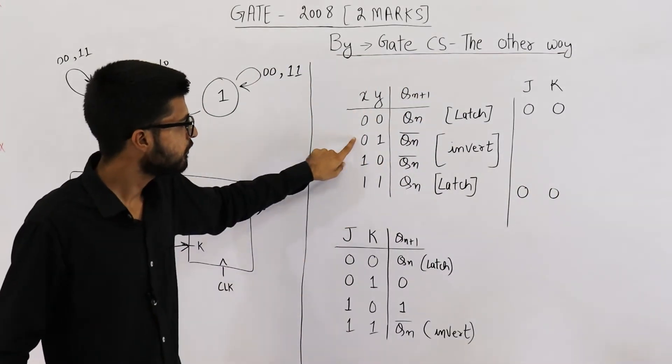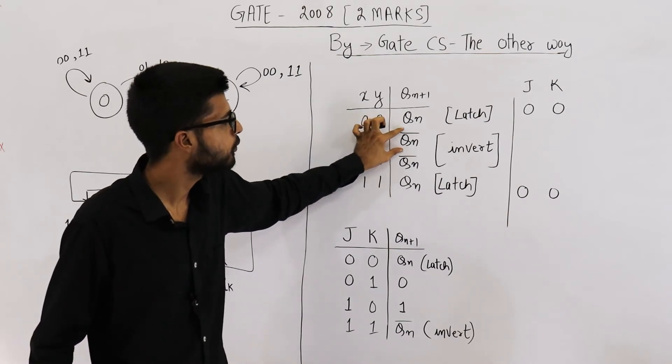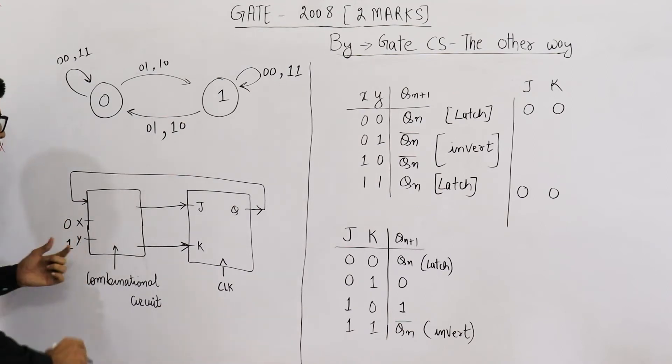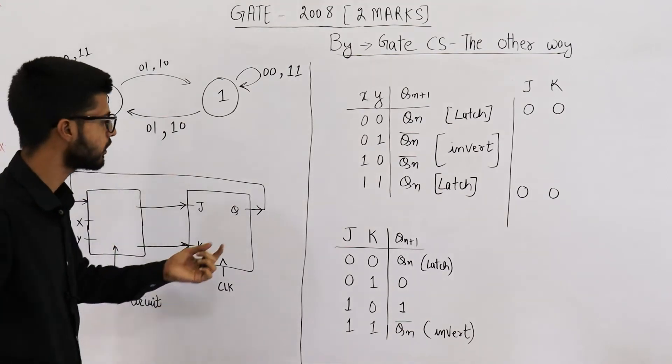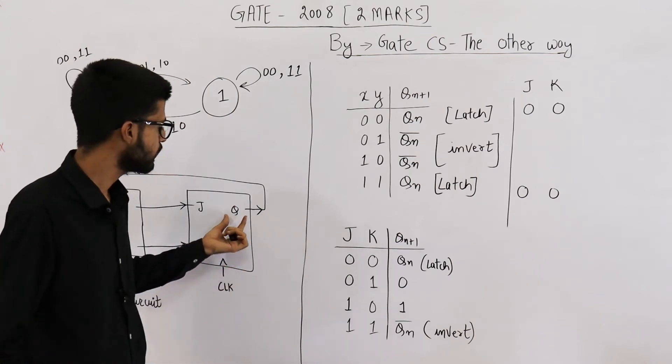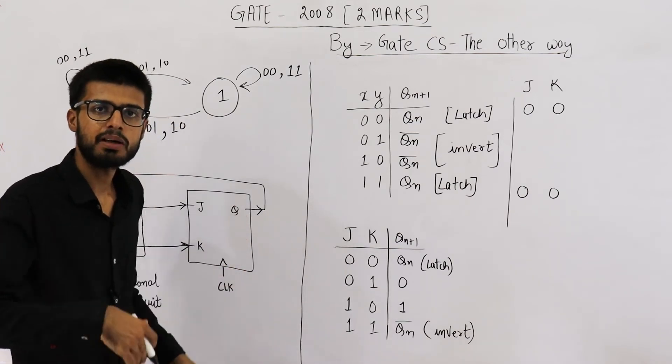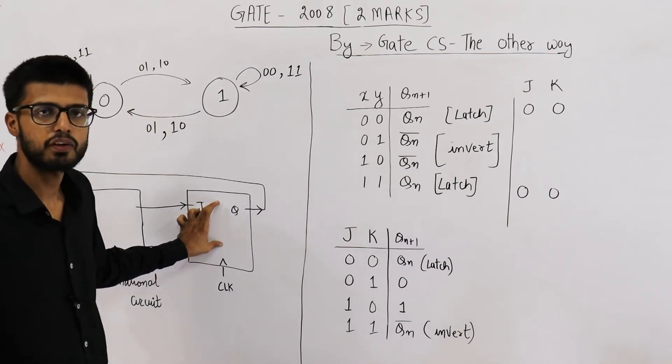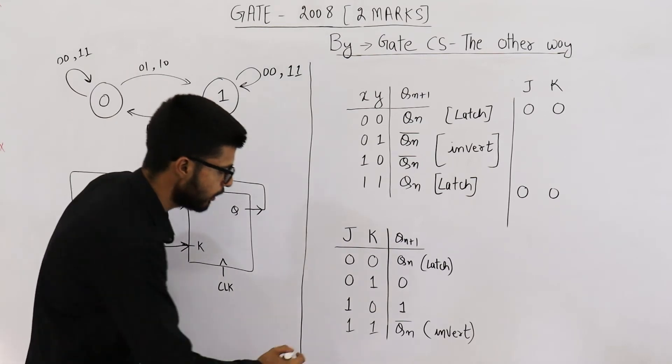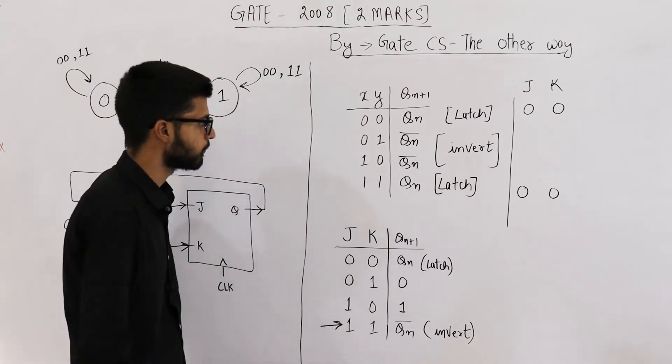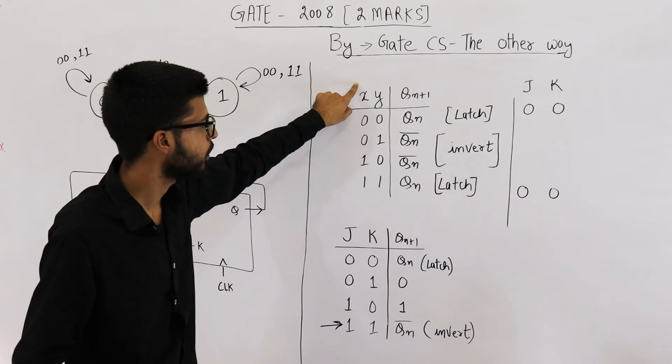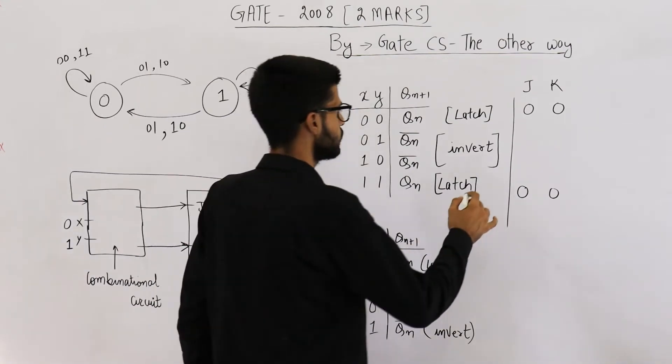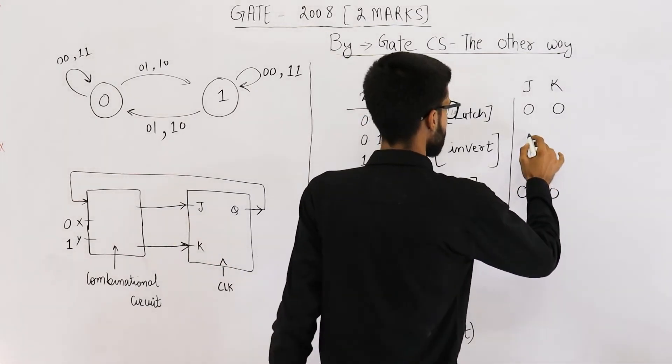Now see, when we apply 0,1, we want the input to be inverted. I am applying 0,1 on X,Y and I want this output must invert. Whatever was its current value must be complemented to give the next value. This JK flip-flop shows such a behavior when input is 1,1. So when we apply 0,1 on X,Y, this JK must get 1,1 in the input here.